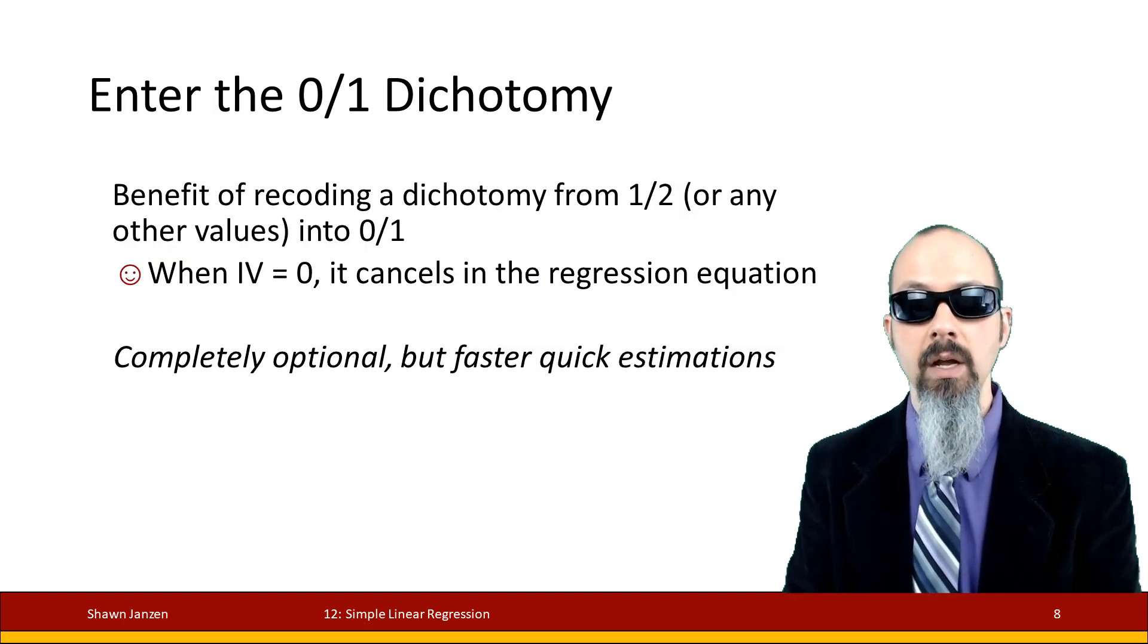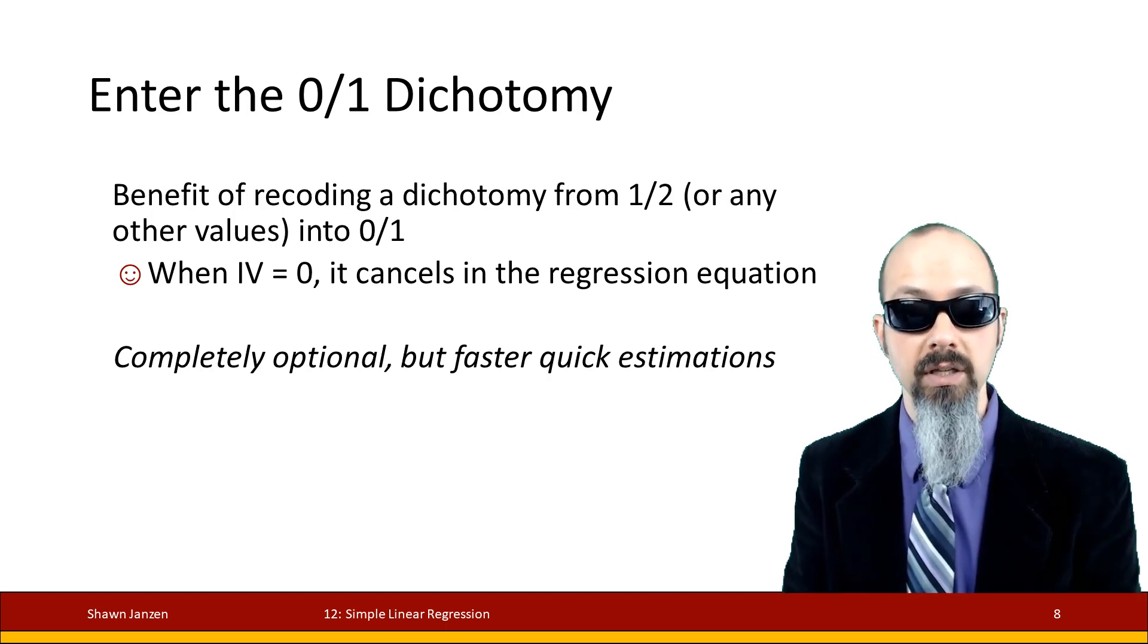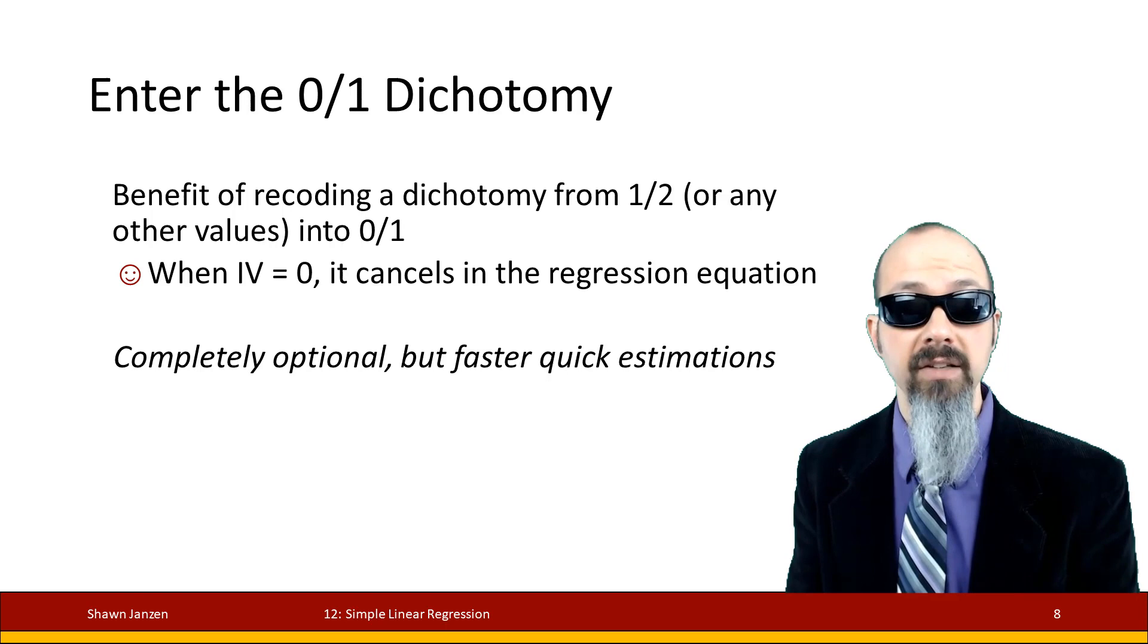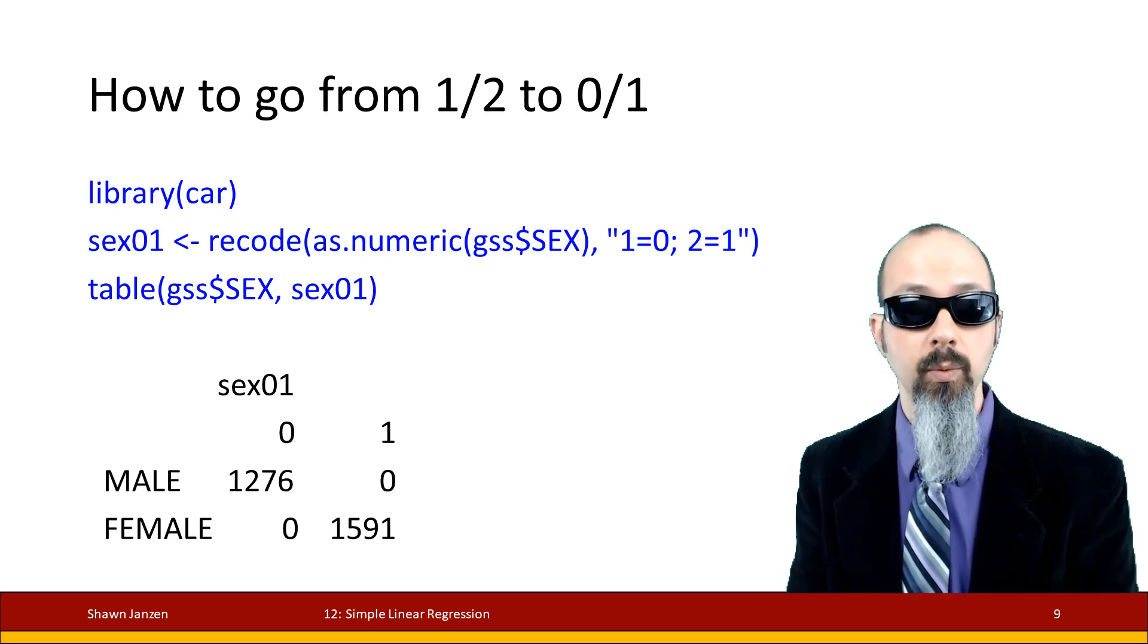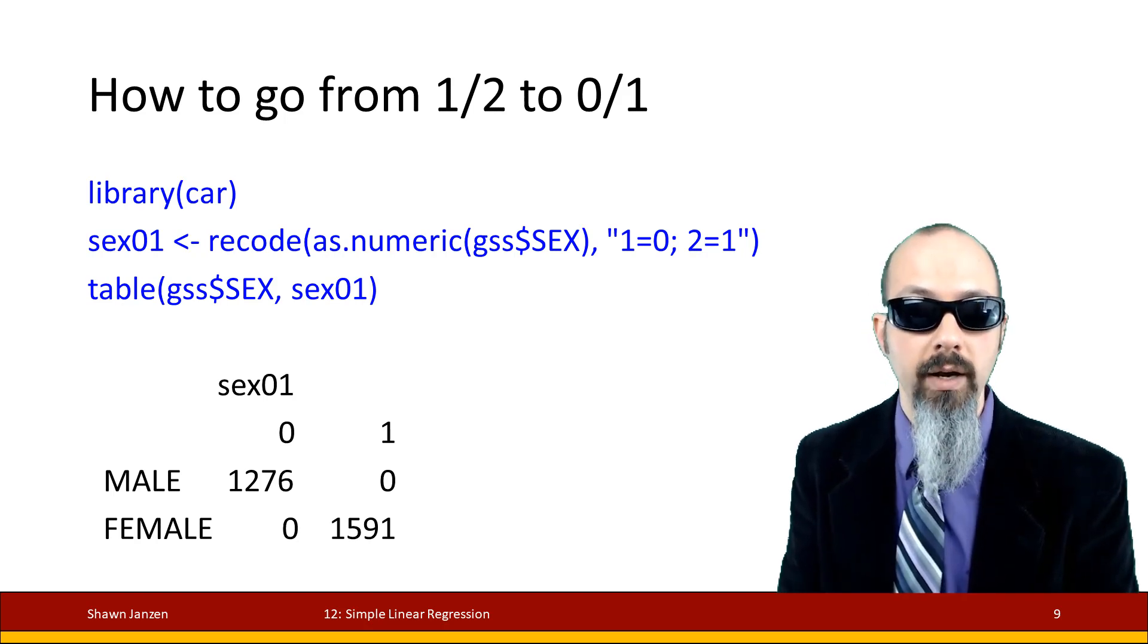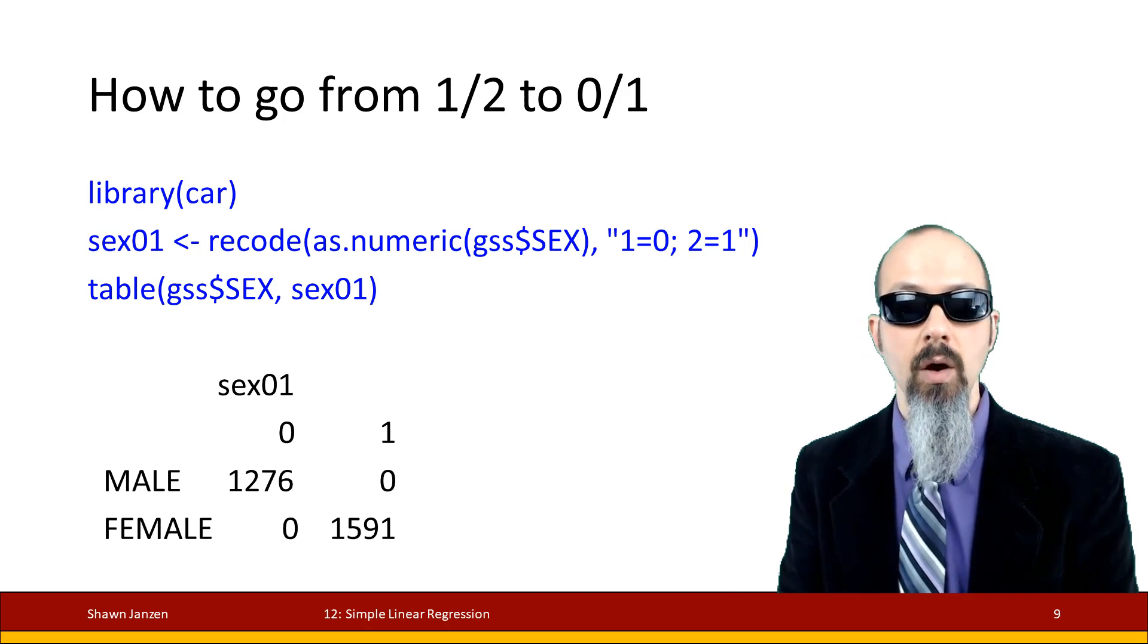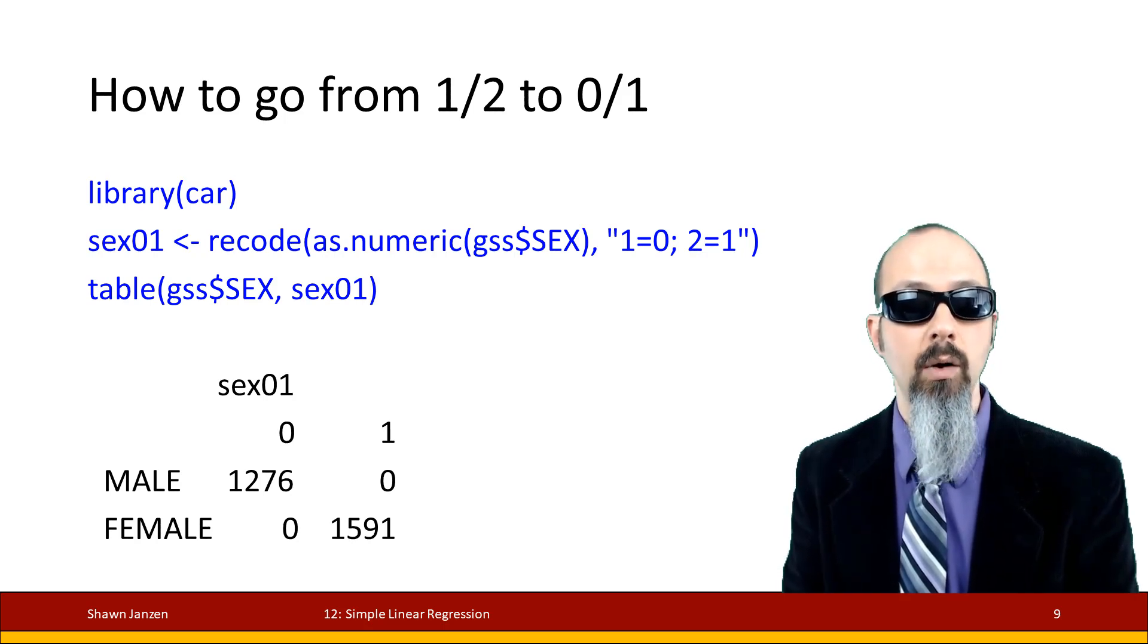It'll be a little bit more clear if I explain how this works if we have a zero-one dichotomy. A benefit of a zero-one as opposed to a one-two is that when we do the math, the zero cancels out the regression coefficient in the equation. It's optional - you don't have to do this - but when you're doing your calculations, it becomes much faster for your estimates. I'm digging into the car library to get the recode function and I'm doing a quick changeover on gender to make it from 1 and 2 to 0 and 1. When I do my bivariate table afterwards, always check your recoded values. Men coded to zero, women coded to one.